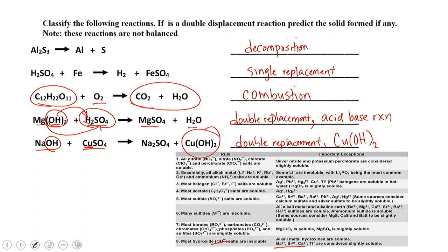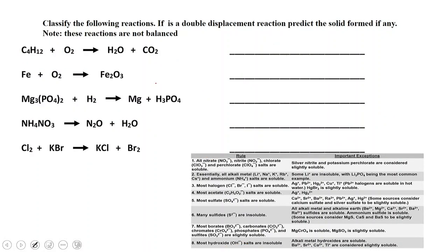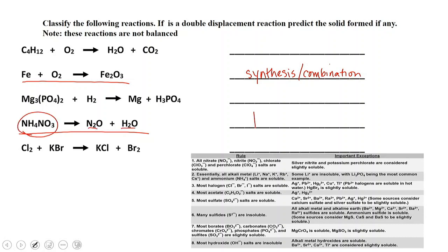For the first example, the answer is decomposition, because we have one substance breaking down into two. The second one is a single replacement, because iron and hydrogen swap out partners in the reactants. Next, iron plus O2 giving us Fe2O3 — we've got two substances giving us one, so we have a synthesis reaction. And ammonium nitrate breaking down to give us dinitrogen oxide and water — one substance breaking down into two — so that is a decomposition reaction.